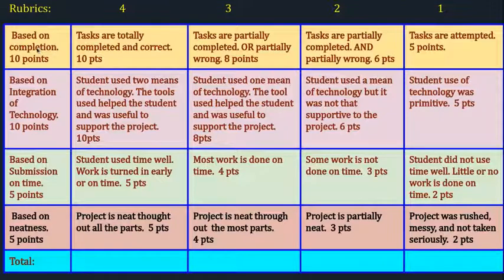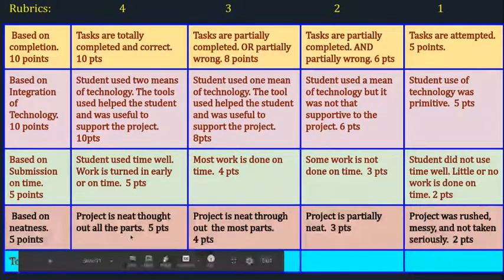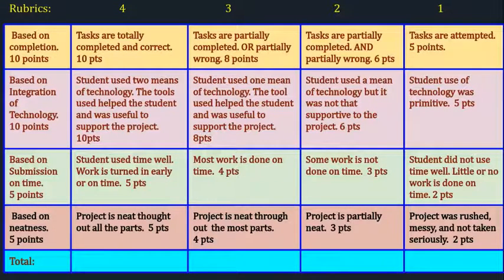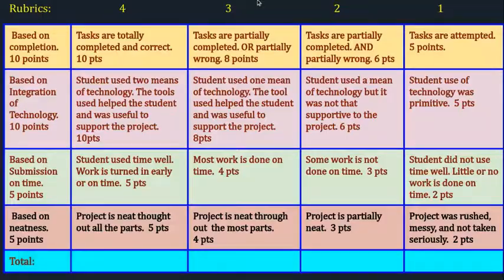For example, if we completed all tasks and did everything in completion, we're going to get 10 points. And if everything is correct, it's 10 points. Based on integration of technology, if we used two means of technology correctly, we're going to get 10 points. Submission on time — if we used time well and turned our work in early or on time, 5 points. Based on neatness, if the project is neat throughout all parts — 5 points. I'm pretty sure creativeness also counts on this one. So the teacher will just mark us overall.